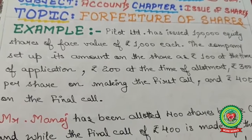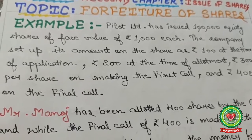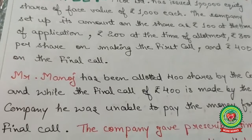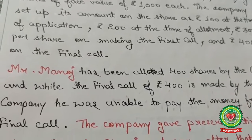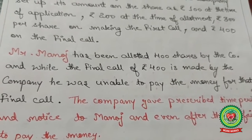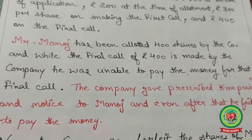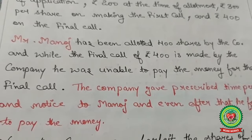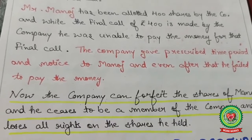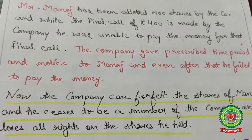Now with an example: Pilot Limited has issued 1 lakh equity shares of face value Rs. 1000 each. The company set up payments as Rs. 100 at application, Rs. 200 at allotment, Rs. 300 on first call, and Rs. 400 on final call. Mr. Manoj was allotted 400 shares. When the final call of Rs. 400 was made, he was unable to pay. The company gave prescribed time and notice to Manoj, but he still failed to pay.